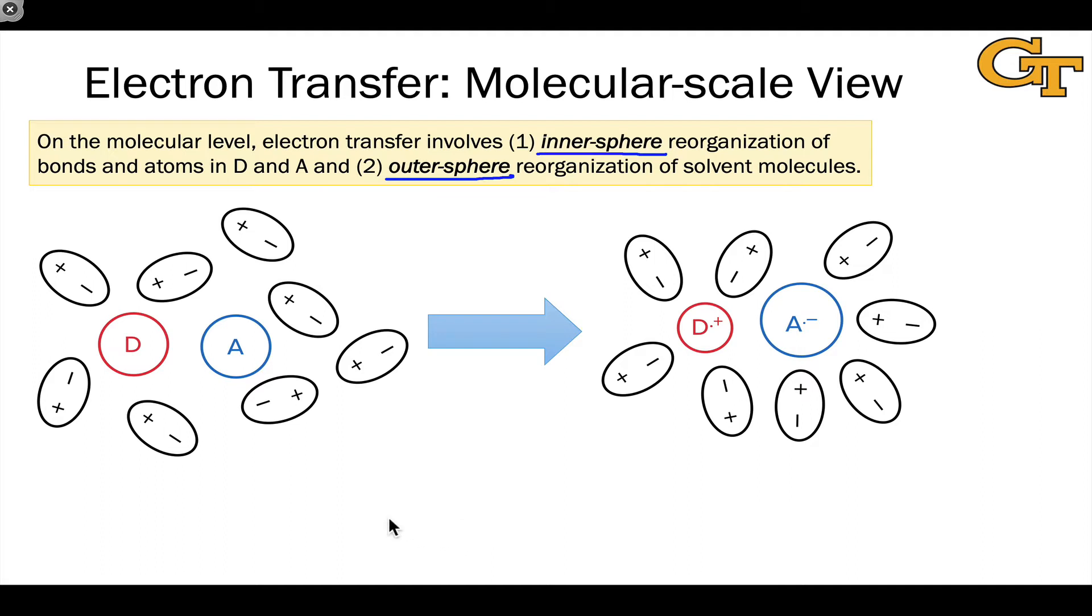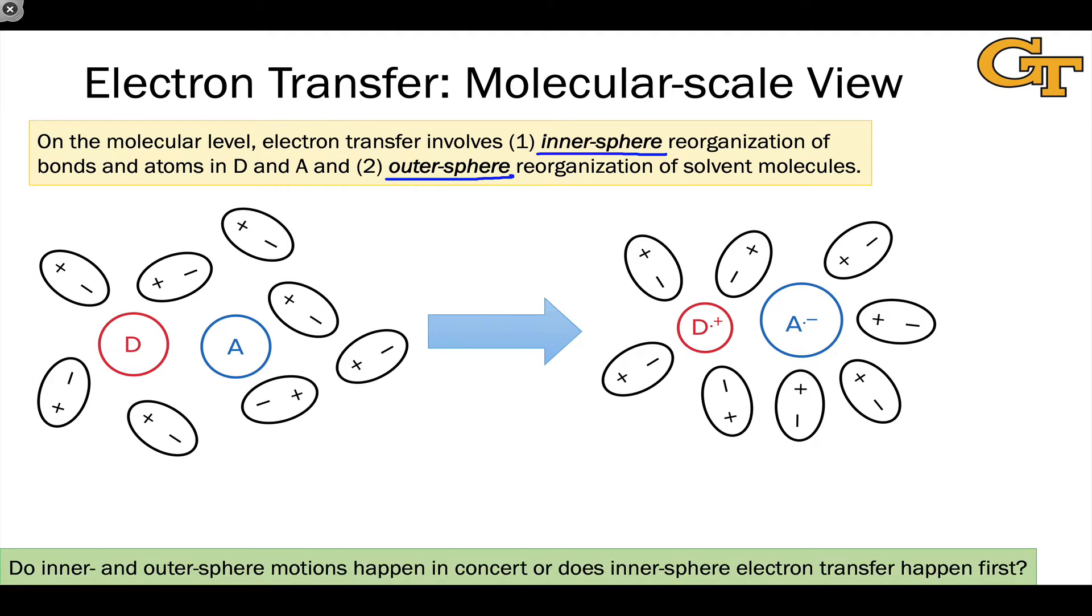The question that distinguishes the two most important theories of electron transfer concerns the order of events here.